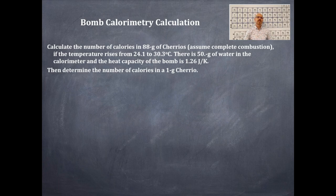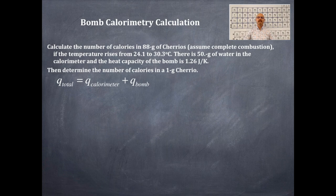So let's see if we can do this problem here. We first need an equation. I haven't given you this equation yet before, but here it is. The Q total is equal to the Q for the calorimeter plus the Q for the bomb. The Q for the bomb is generally given to you when you purchase the bomb, and it's given to you in this problem. That is, the heat capacity of the bomb is 1.26 joules per Kelvin.